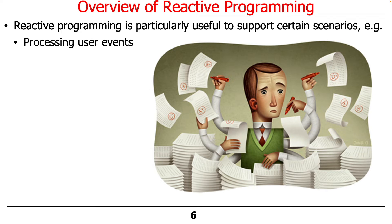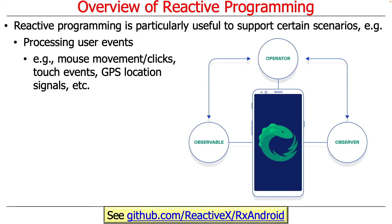One use case is processing user events. In Android, for example, you've got lots of events happening, like people moving their fingers around the screen or getting information from GPS location signals. On a traditional desktop or laptop, you'd have mouse movements and mouse clicks. The reactive programming model is very nice for this because you have subscribers waiting for events to happen, and something detects those events and propagates them to the subscribers, who then do stuff in response.